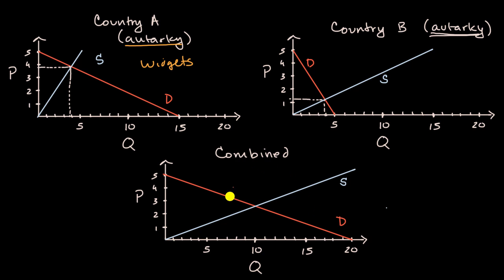We can view this as our supply and demand curves for the combined markets, because now they're trading. We are not in an autarky anymore. Notice what has happened. Our equilibrium price is now someplace in between these two equilibrium prices, a little bit under $3, and our equilibrium quantity is a little bit under 10 units.